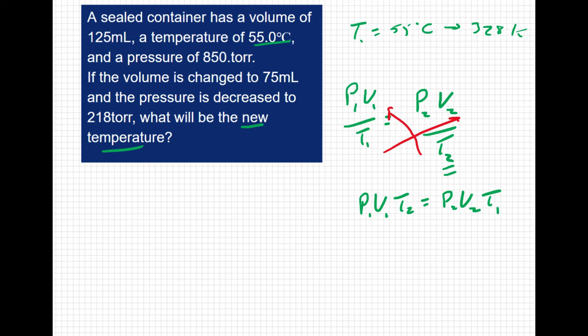Now, if we want to isolate T2, I could take P1 V1 and divide both sides. We get a statement that ultimately looks like this: T2 is going to equal P2 V2 T1 all over P1 V1. There are a number of ways to do this, but I think that's the clearest way. So let's plug in our values here.